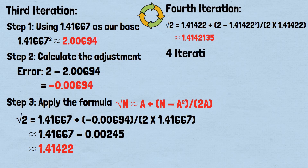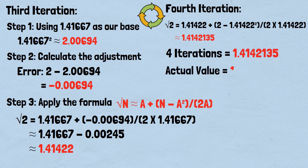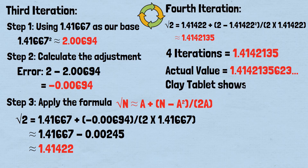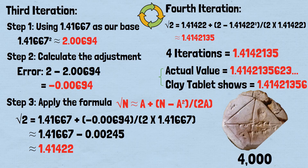After four iterations, we've achieved 1.4142135. The actual value is 1.4142135623. The clay tablet shows 1.41421356. We've matched the precision found on the 4,000-year-old clay tablet.